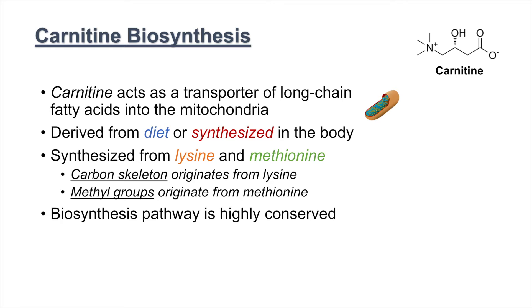The carnitine biosynthesis pathway is highly conserved — all the way from prokaryotes to eukaryotes — and there are four important enzymes in the pathway, which we will discuss in the next slide.